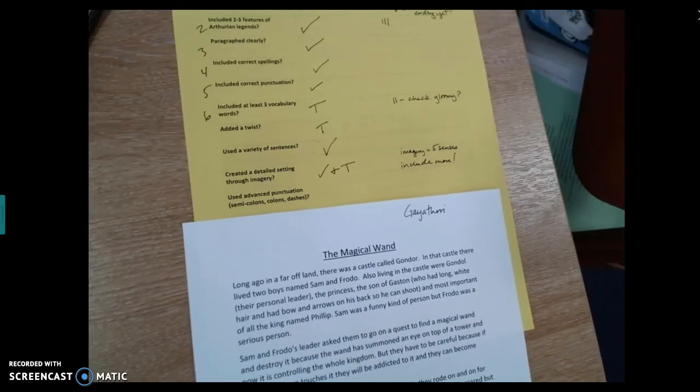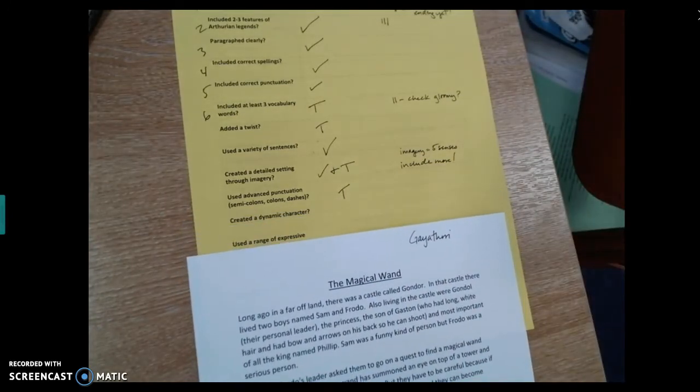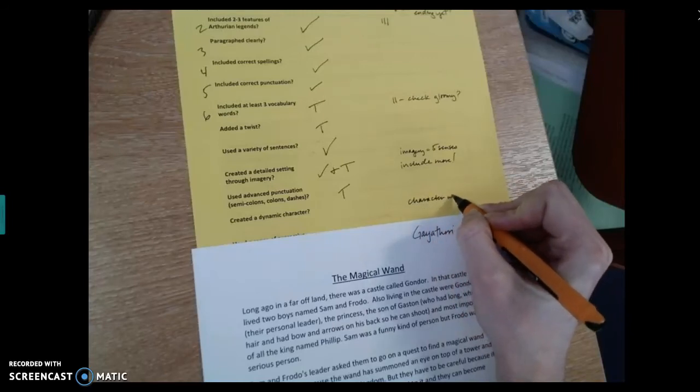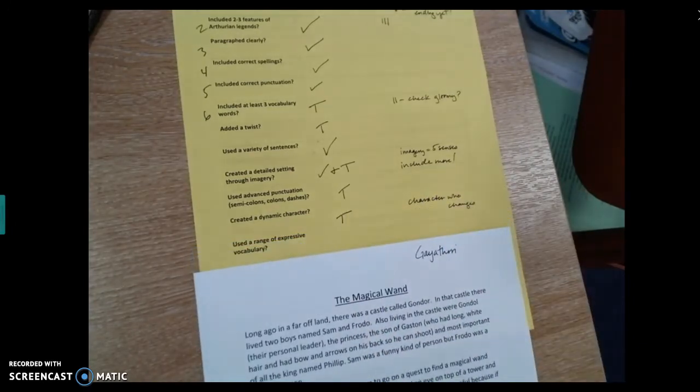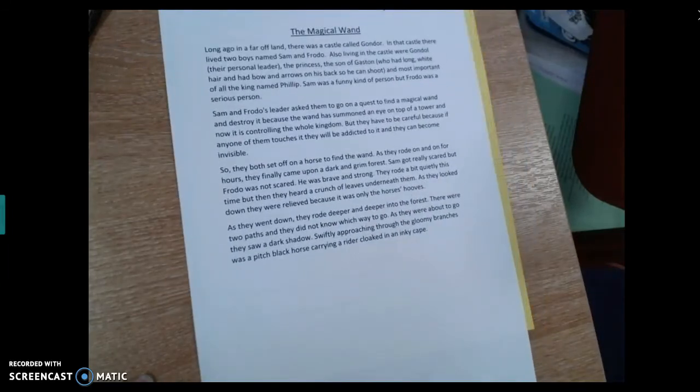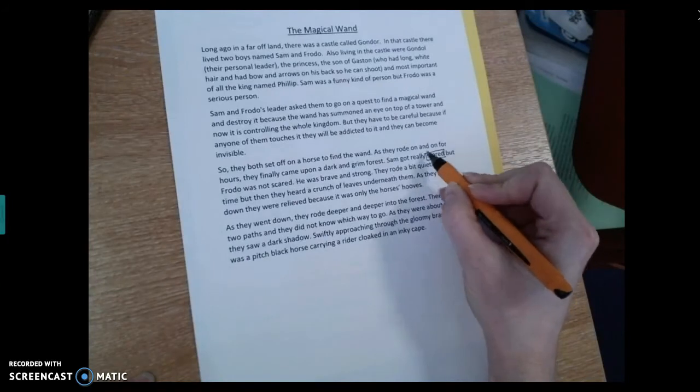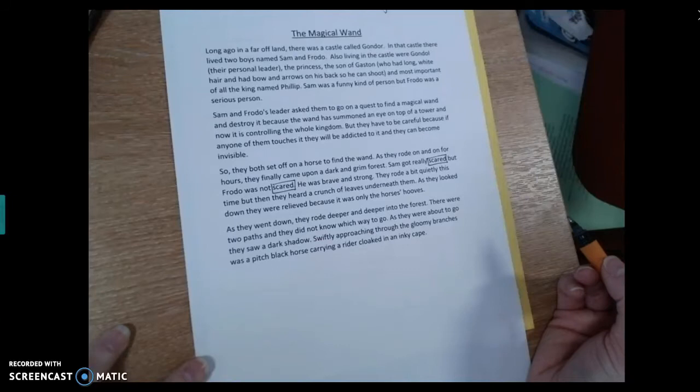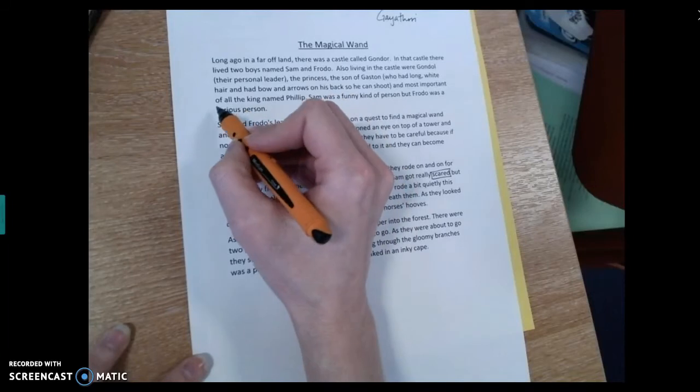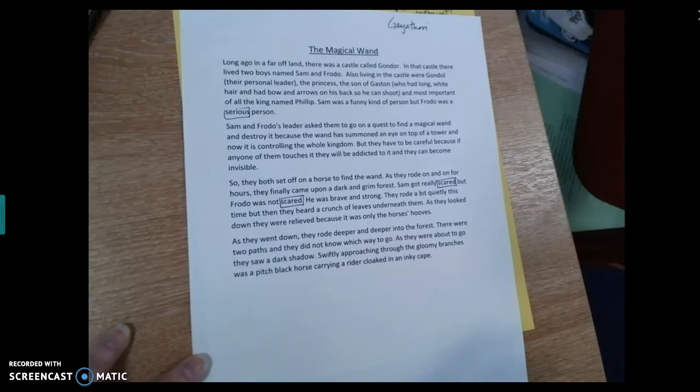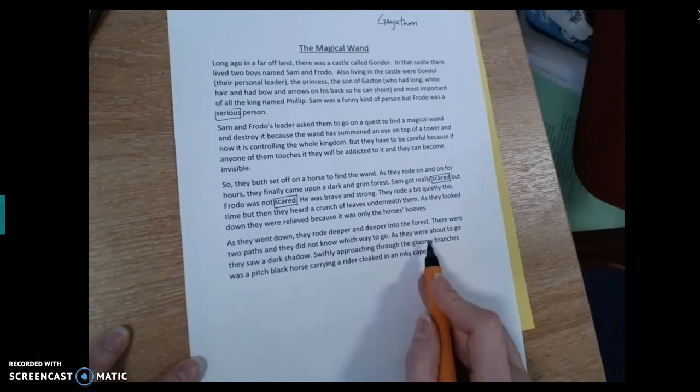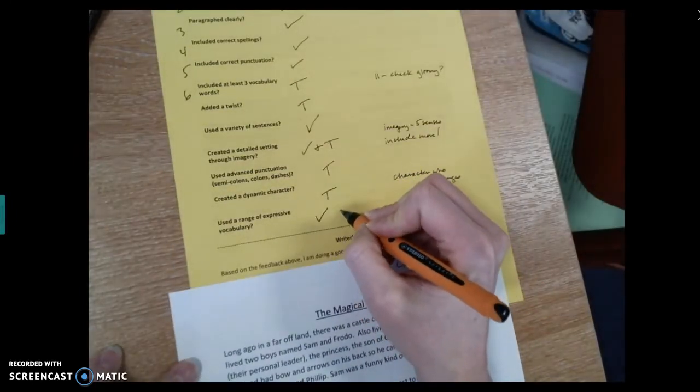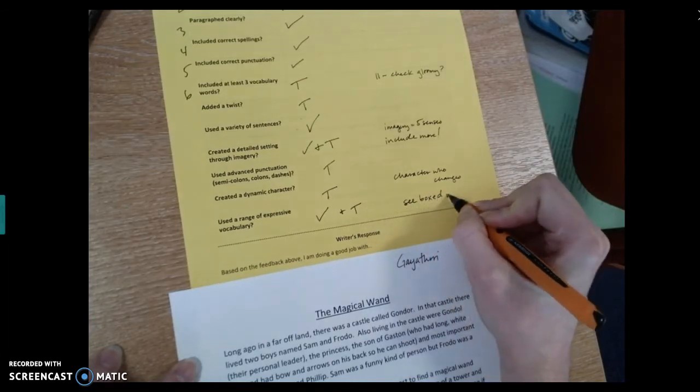Okay, has she used any advanced punctuation, semicolons, colons, and dashes? That is a target. And that's a really complicated thing to do, but that's something she can work on if she wants the challenge. Has she created a dynamic character? A dynamic character is a character who changes. And so far, we haven't really seen that. So I'm going to say that's also a target. Has she used a range of expressive vocabulary? I do quite like some of Gayathri's vocabulary, but there are some things she could probably change. Scared, right? We could come up with maybe a slightly better word for that. What else could we do? We could kind of look up here. It says funny and serious. We could maybe think about those words. Could they become something a little bit more vibrant? So she does have words like inky, which I really like, and gloomy. I like the alliteration here, horse's hooves. I like relieved. So she does have some good vocabulary, but there's a little bit of room for improvement. So again, I'm going to give her a tick and a target. And I'm going to say see boxed words. So she knows those are words to think about.